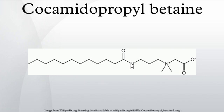Cocamidopropyl betaine is an organic compound derived from coconut oil and dimethylaminopropylamine. It is a zwitterion, consisting of both a quaternary ammonium cation and a carboxylate. CAPB is available as a viscous pale yellow solution that is used as a surfactant in personal care products. The name reflects that the major part of the molecule, the lauric acid group, is derived from coconut oil.